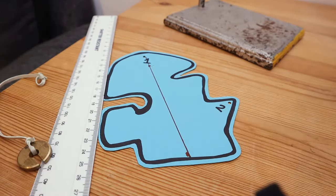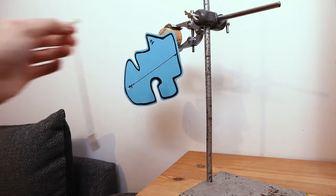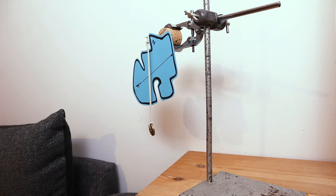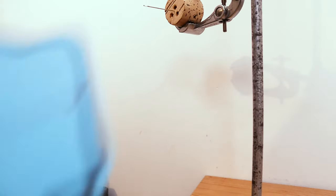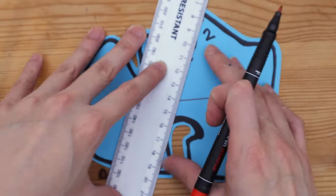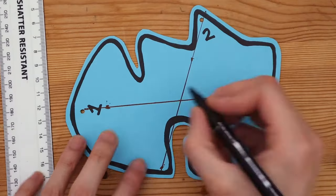Hang the shape up by the second point of suspension and repeat what we've done before. Where the two lines intersect, that's the center of gravity.